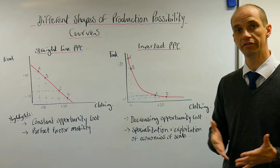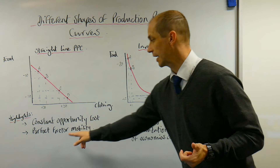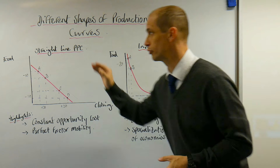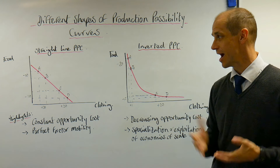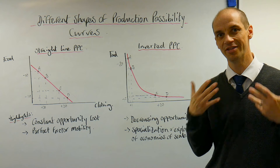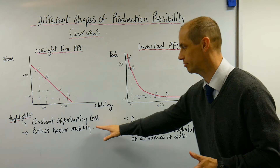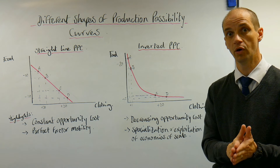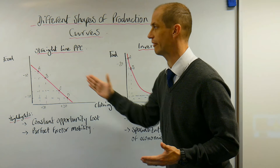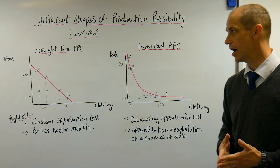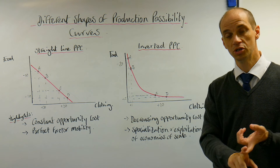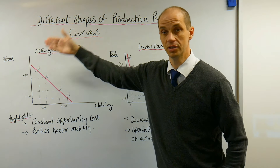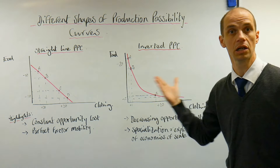This really emphasises the notion of perfect factor mobility — the fact that land, labour, and capital can all be used equally well to produce food or clothing. This might be stretching the realms of imagination, but it is one of the key assumptions in David Ricardo's theory of comparative advantage. In truth, of course, capital goods, machinery, and labourers will develop different skills and therefore will not be equally able to produce food and clothing.